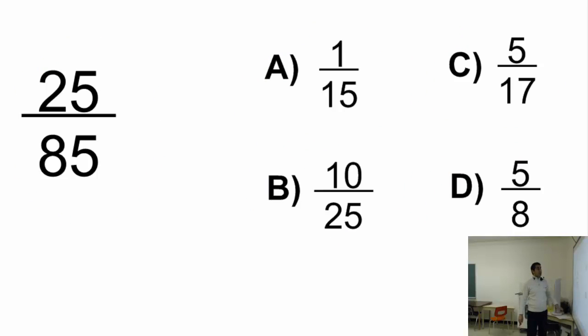First of all, this is not in lowest terms. Make sure you have this fraction in lowest terms. I can easily see there is a 5 here and there is a 5 there. So both numbers are divisible by 5. Let's divide them by 5.